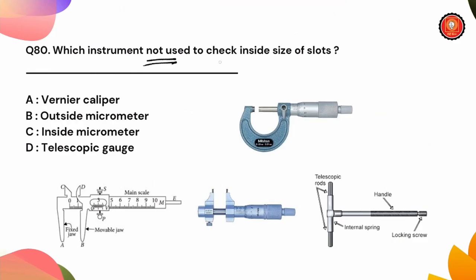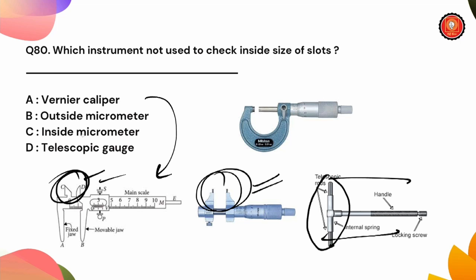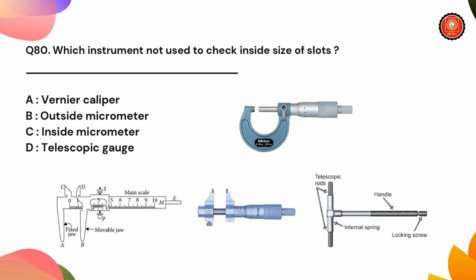Which instrument is not used to check inside size of slots? Options are vernier caliper, outside micrometer, inside micrometer, or telescopic gauge. Vernier caliper does inside measurement, inside micrometer does inside measurement, telescopic gauge does inside measurement, but outside micrometer does outside measurement only. Answer is option B, outside micrometer.